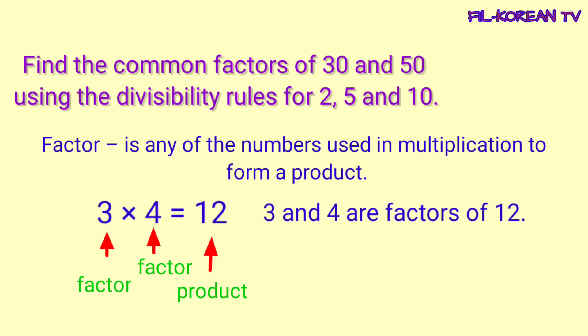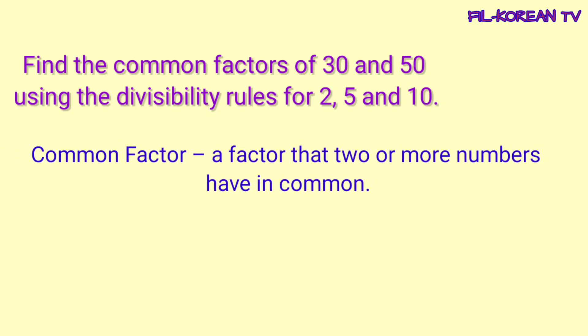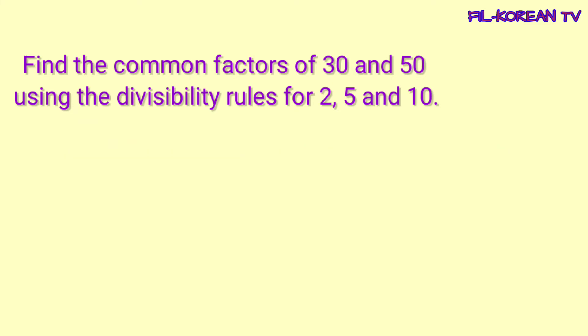Ano naman itong sinasabing common factor? Common factor — a factor that 2 or more numbers have in common. Ang common factor naman na sinasabi, ito yung number na pareho factor ng dalawa o higit pang numero. Ngayon, kunin natin ang common factors ng 30 at 50. I-apply din natin dito yung divisibility rules ng 2, 5, at 10.